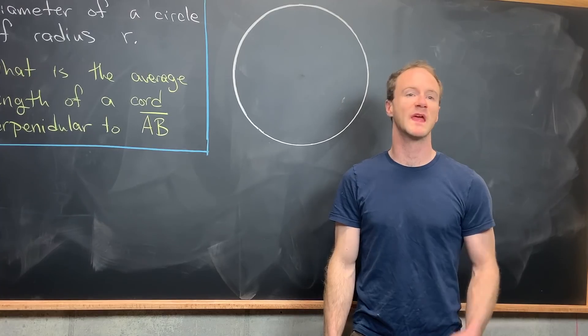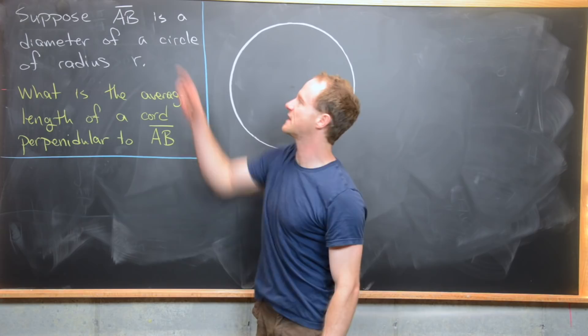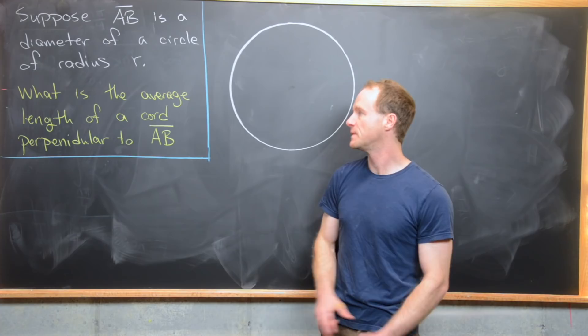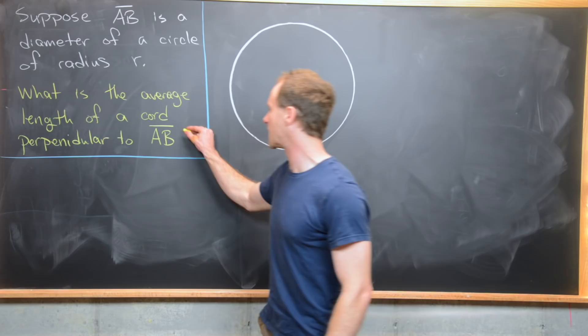Here we're going to look at a fairly quick but interesting geometry problem. We want to suppose that the line segment AB is a diameter of a circle of radius R. And then our goal is to find the average length of a chord that is perpendicular to this line segment AB.